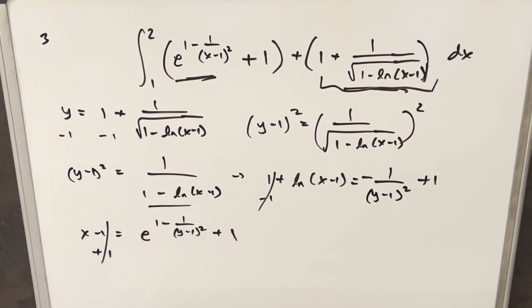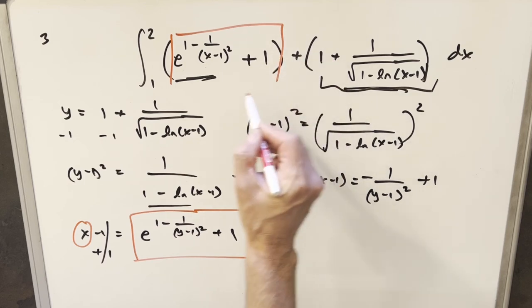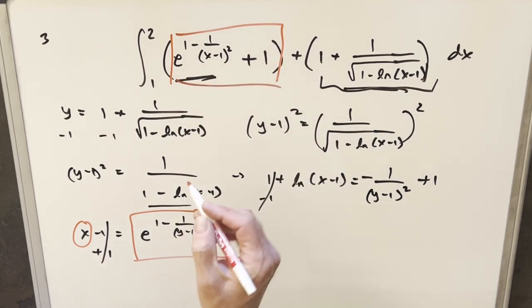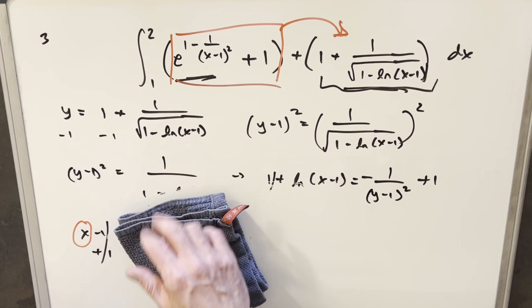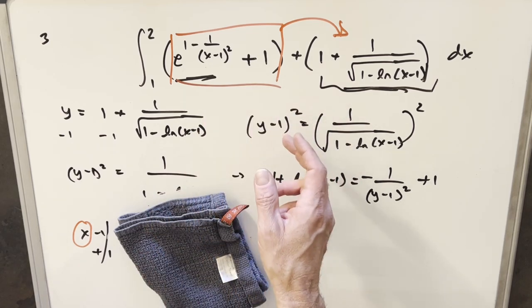That's going to cancel. And now we've isolated our x. But then we can notice that what is this thing? Well, this is exactly this right here, just with the variable change from x to y. So that tells me that these two are inverses. And now that we see that these two functions are inverses of each other, I'm going to rewrite the integral.